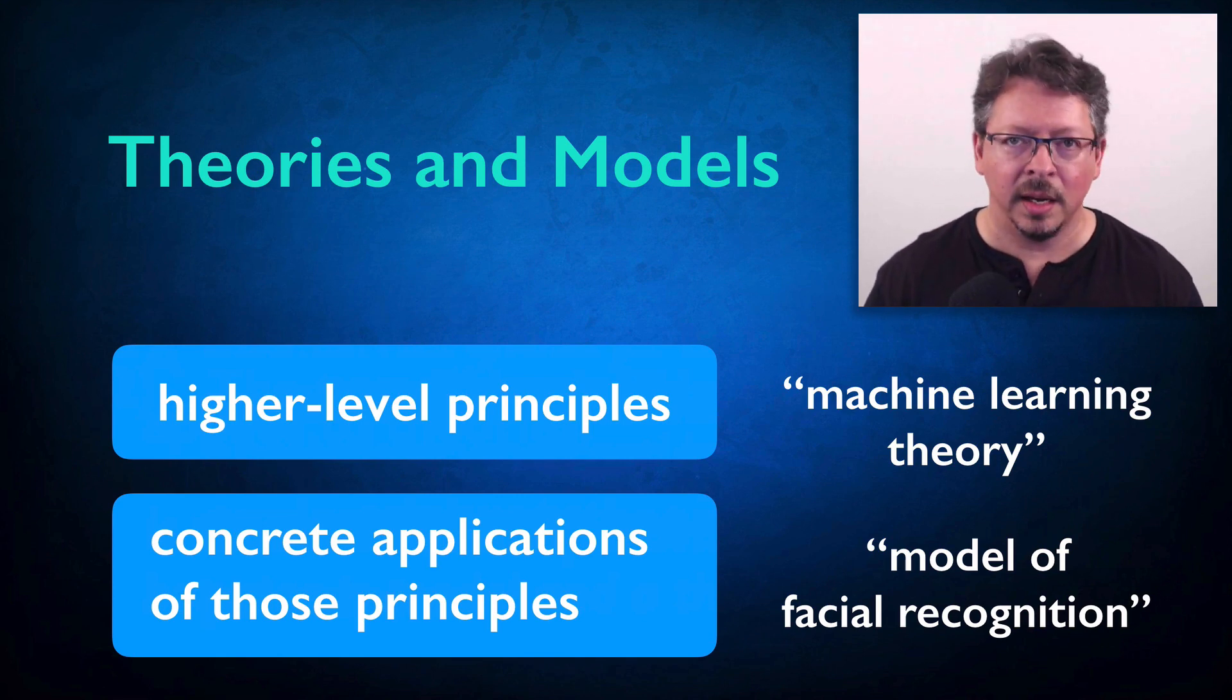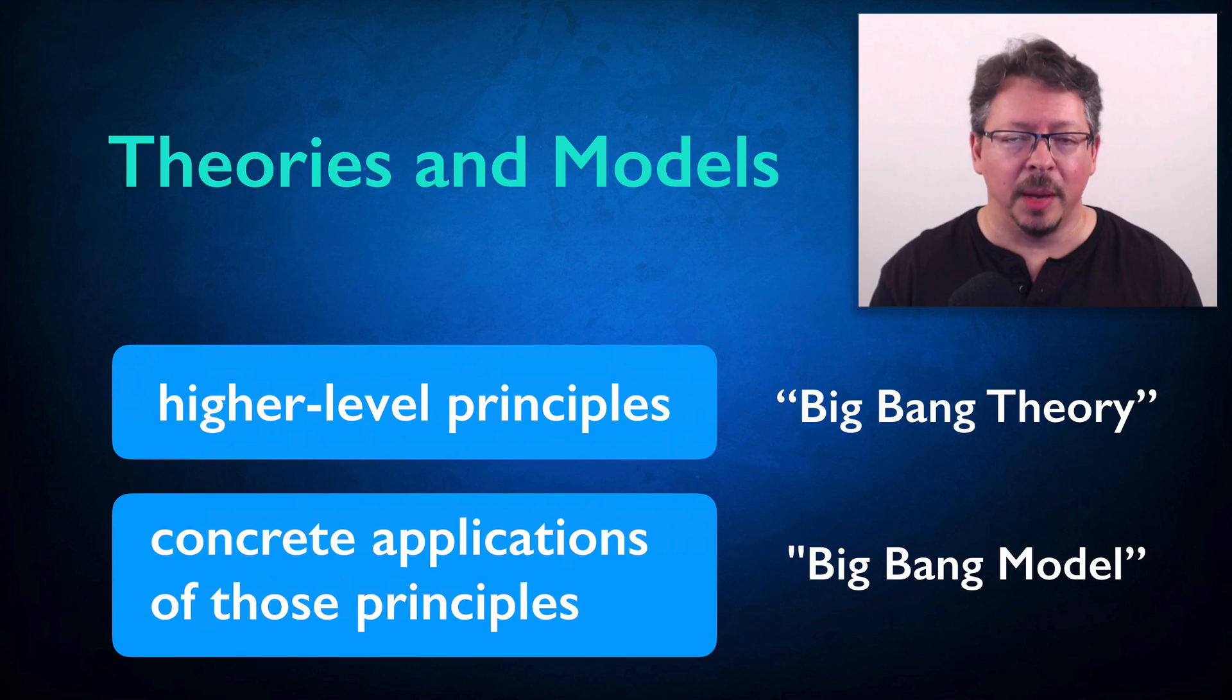But like I said, in many of these cases, people will use either term, theory or model, and nothing much turns on it. It's common, for example, for scientists to use the term Big Bang Theory and Big Bang Model. The Big Bang Model is a concrete application of the principles of general relativity and other branches of physics. But it's also a theory, obviously. You're not saying anything false by calling it a theory.